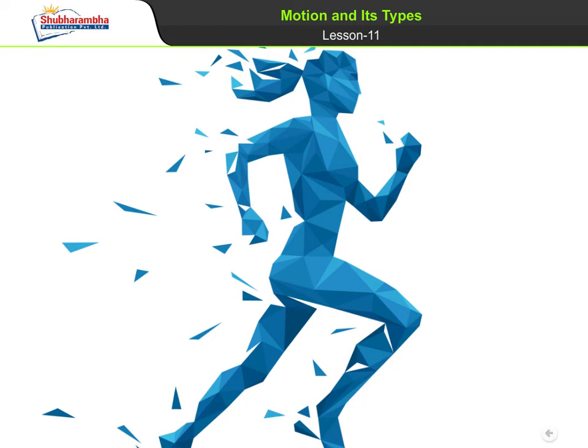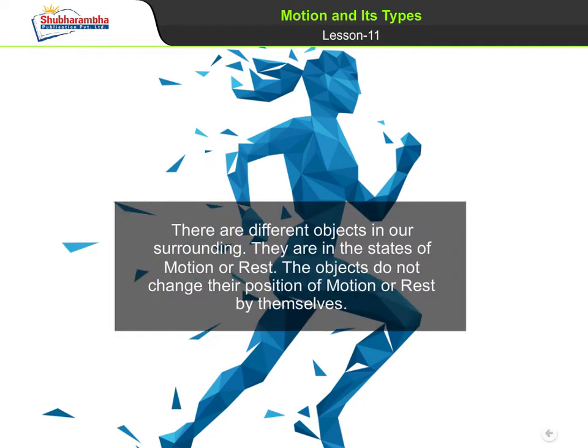Lesson 11: Motion and Its Types. There are different objects in our surrounding. They are in the states of motion or rest. The objects do not change their position of motion or rest by themselves.